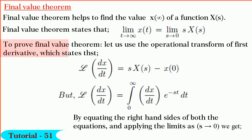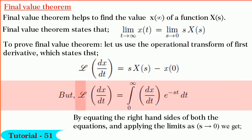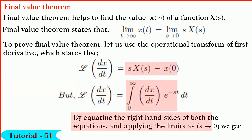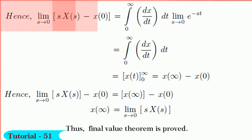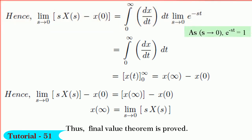To prove the final value theorem, let us use the same operational transform of the first derivative. We know that the Laplace transform of dx/dt is equal to sX(s) minus x(0). But by definition, the Laplace transform of dx/dt is equal to the integration of dx/dt into e to the power of minus st, dt, within limits from 0 to infinity. By equating the right-hand sides and applying limits as s tends to 0, since e to the power of minus st equals 1 as s tends to 0,